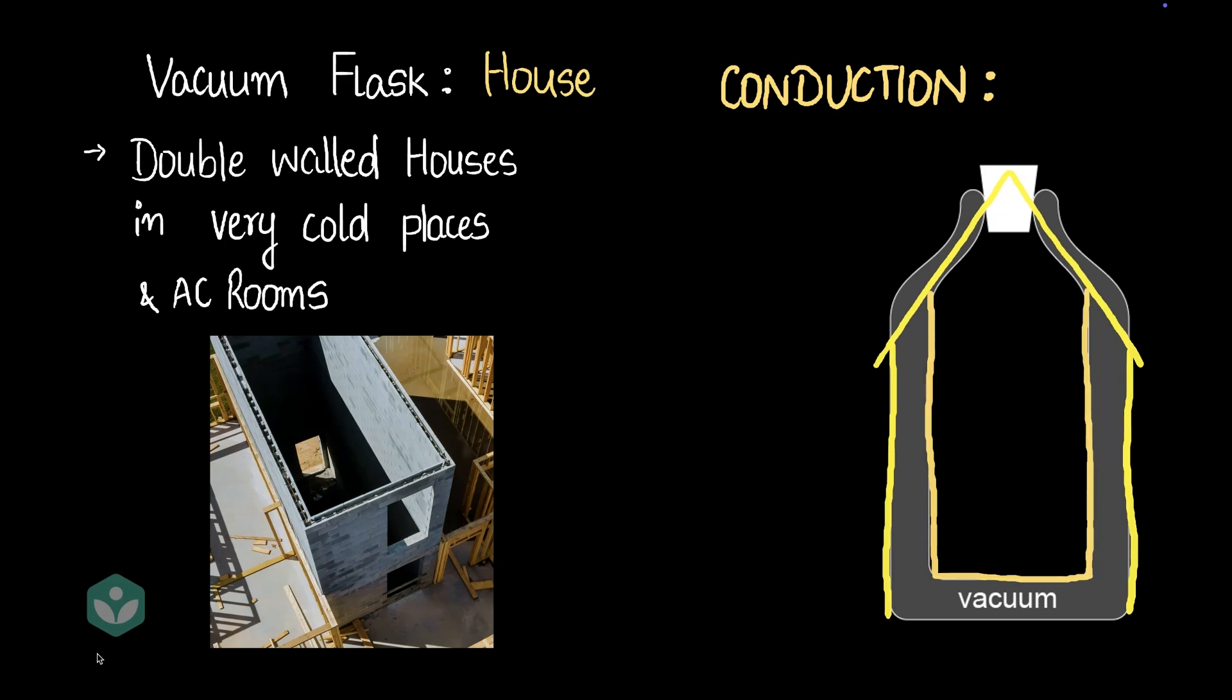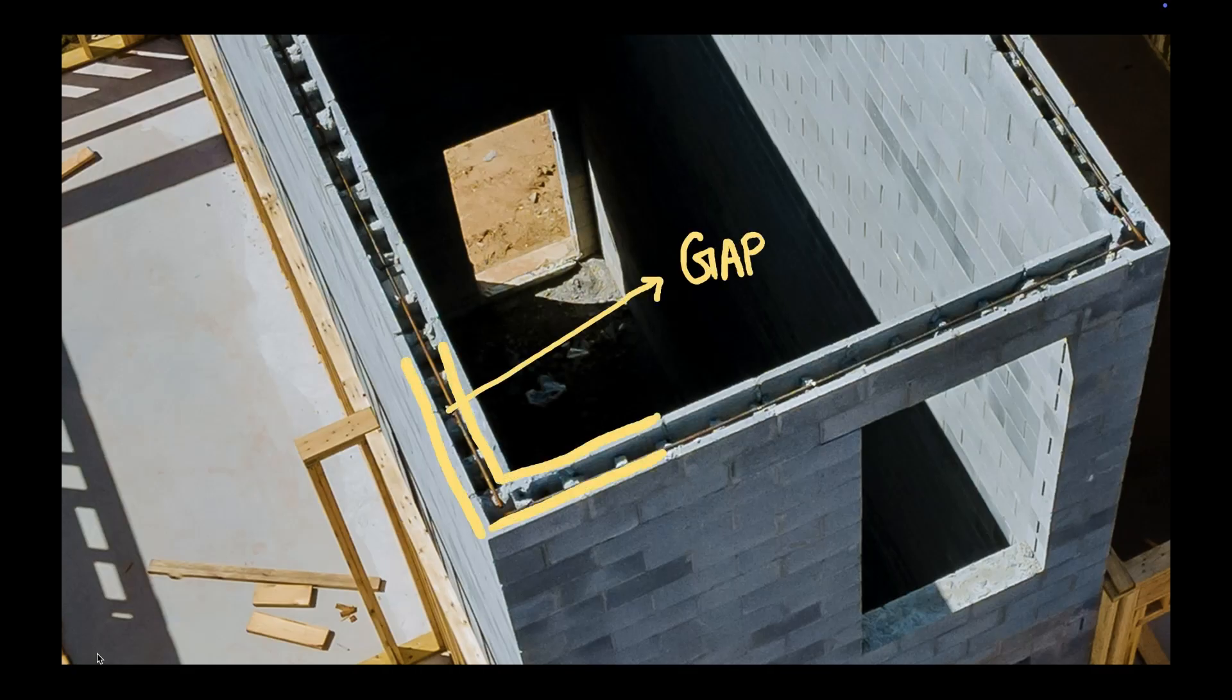For example, look at this house here. Let's zoom in a little bit. You can see that there's a gap between the walls. That gap acts as an insulator. That gap prevents heat loss through conduction.